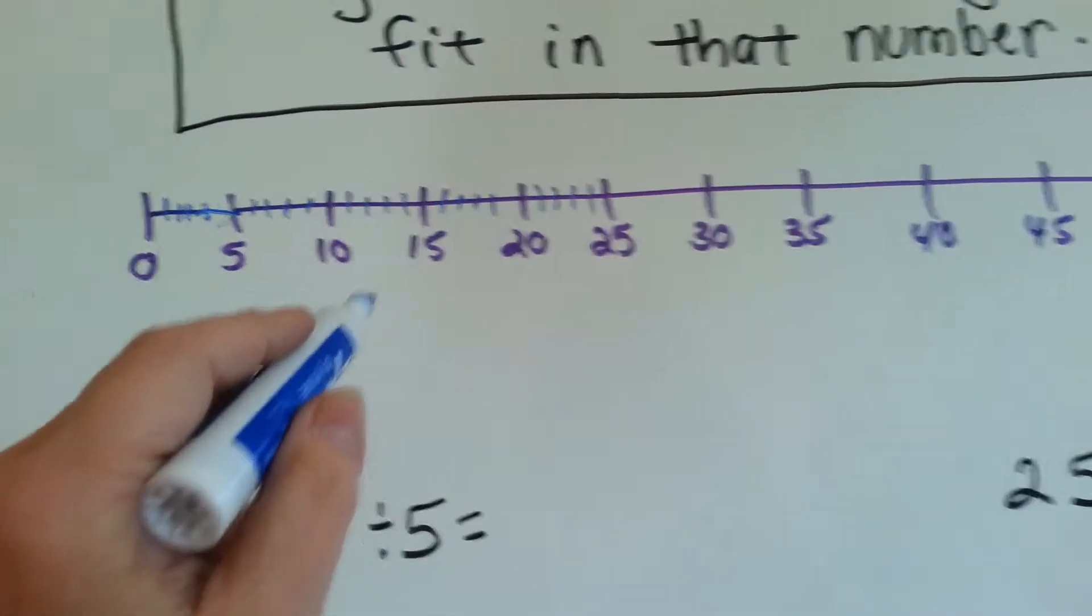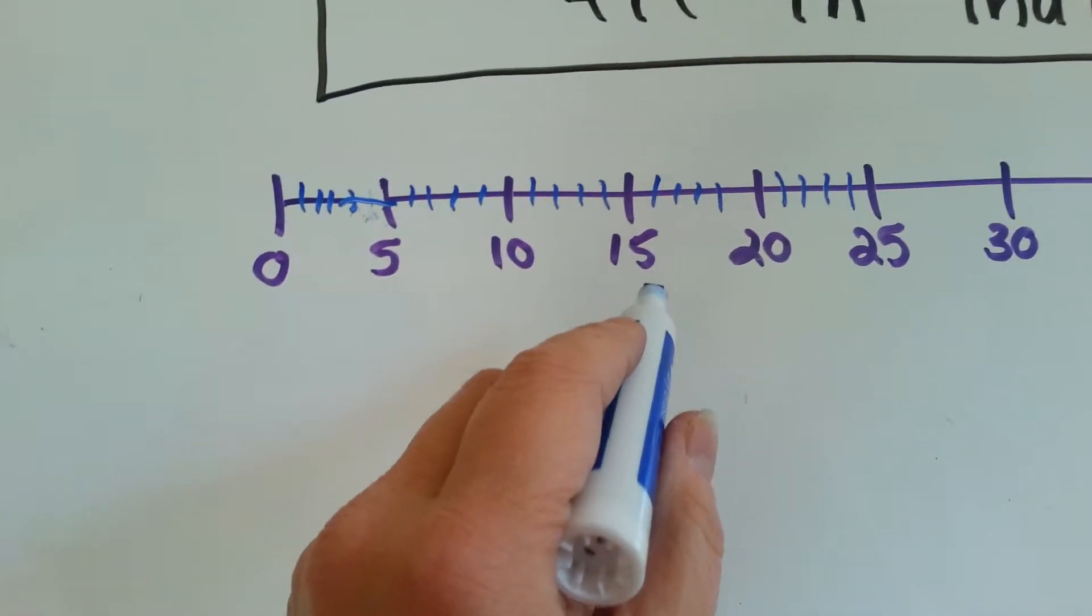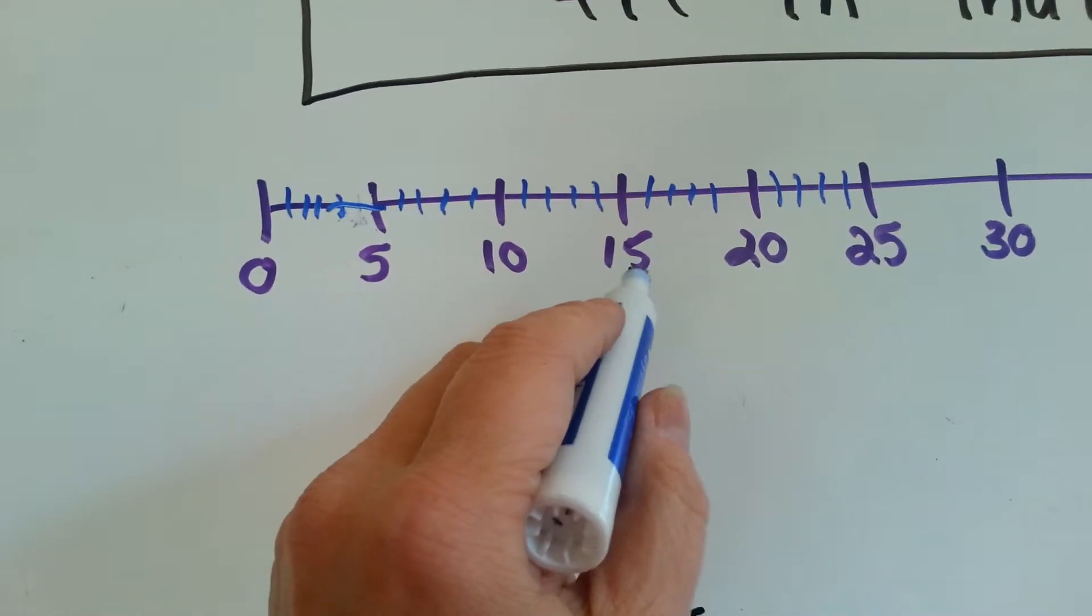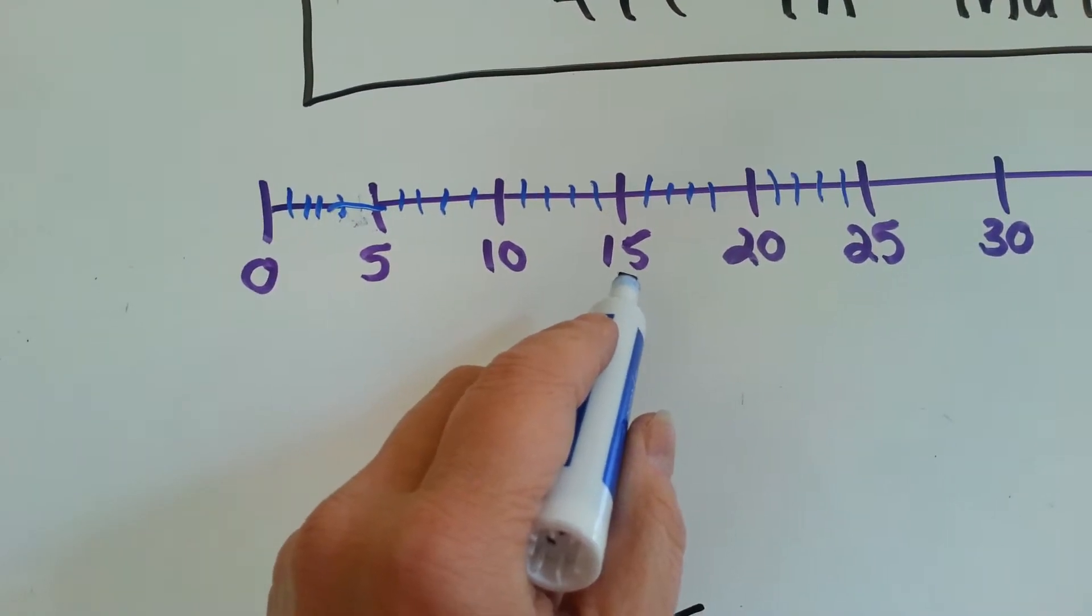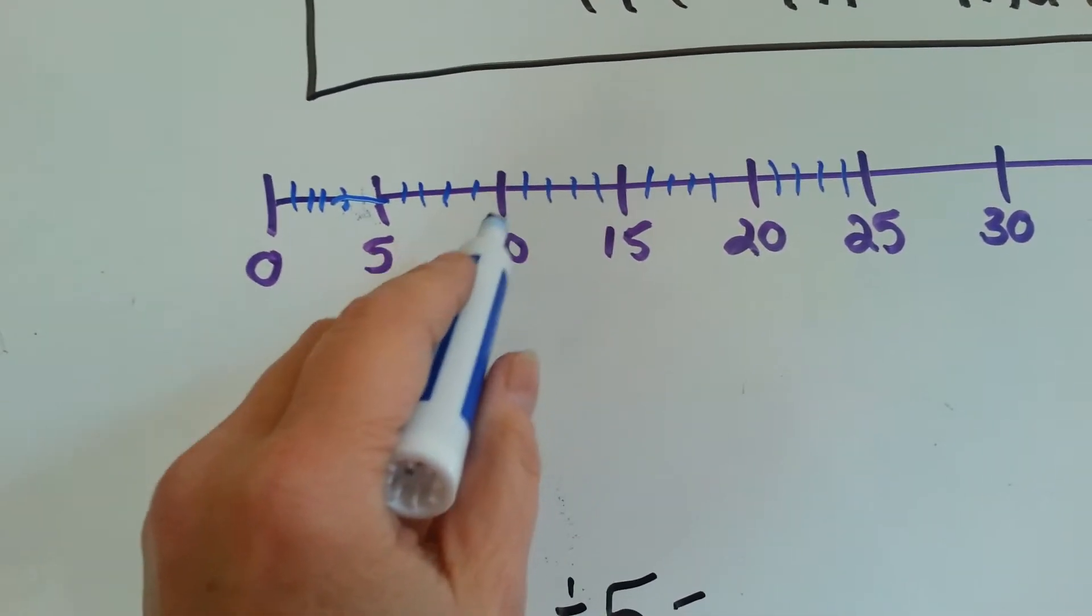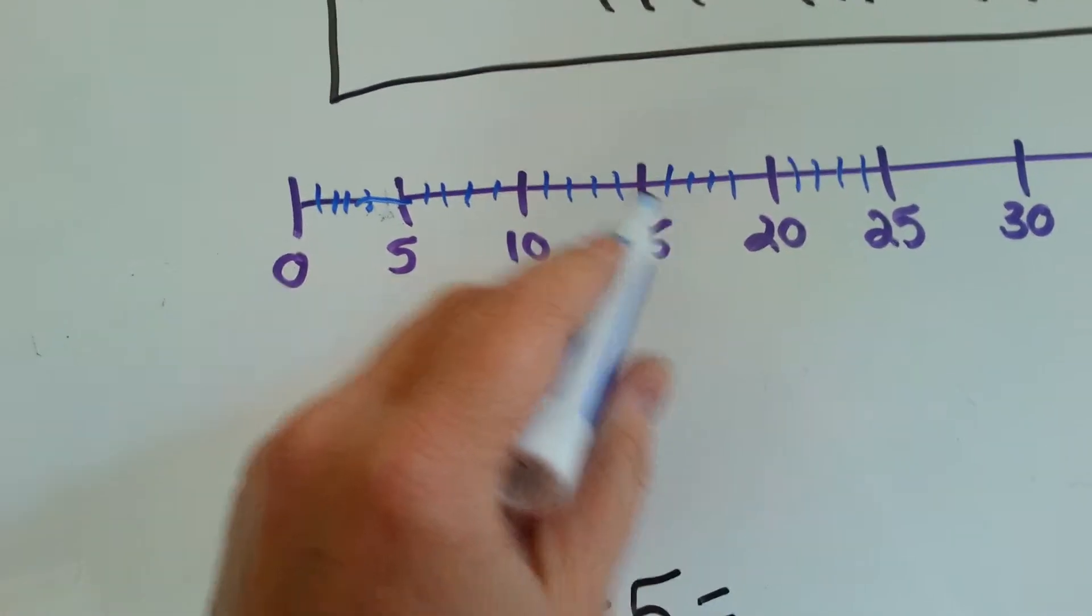And then you could do it. So you could say 15 divided by 5, you would go down 3 times because it's groups of 5, 10, 15. You would have jumped 3 times.